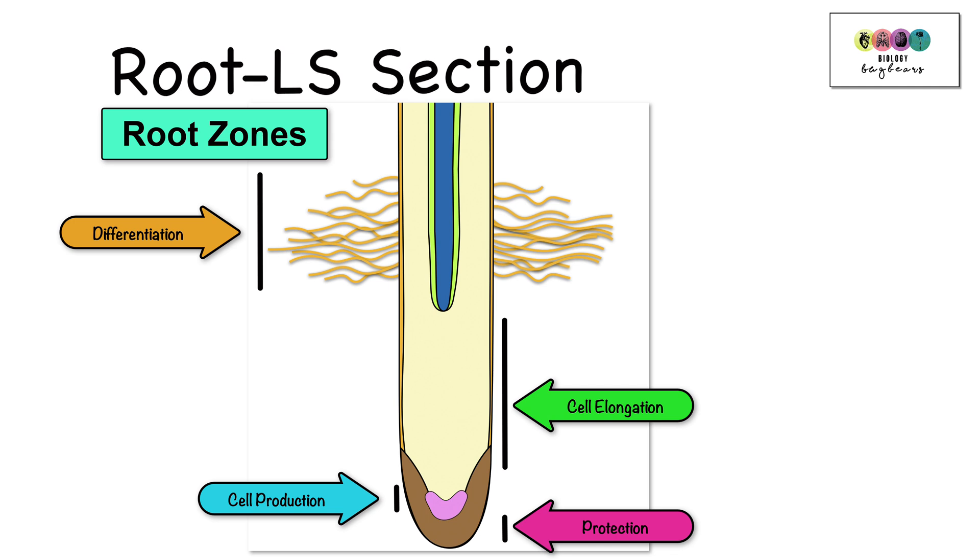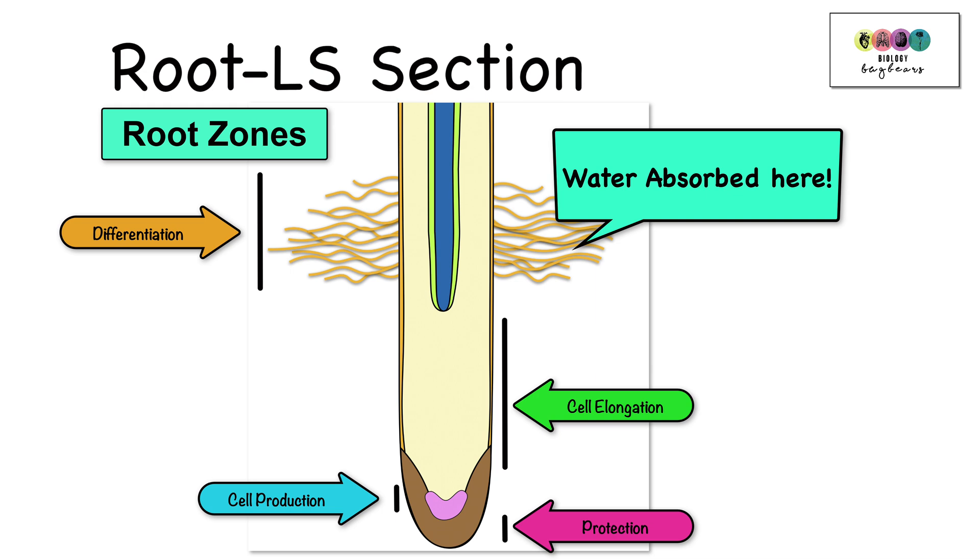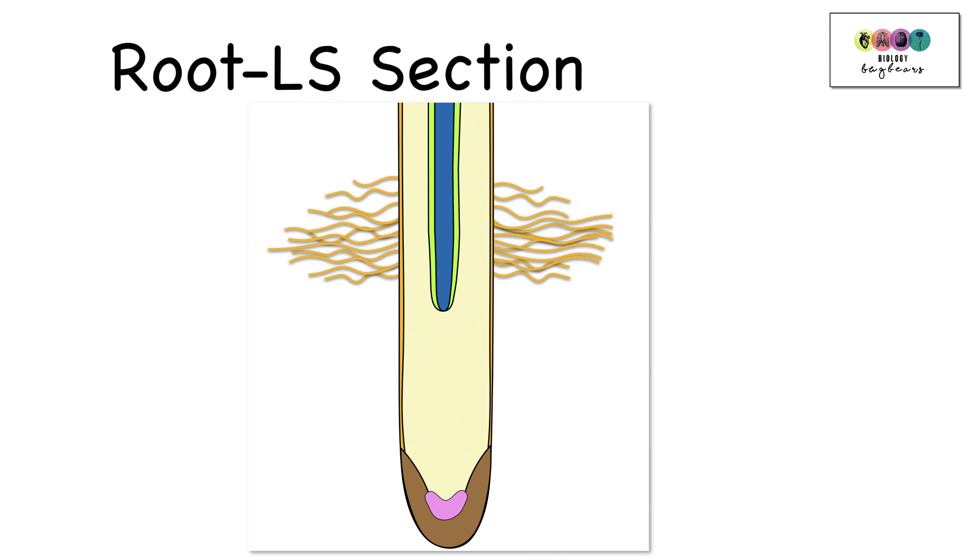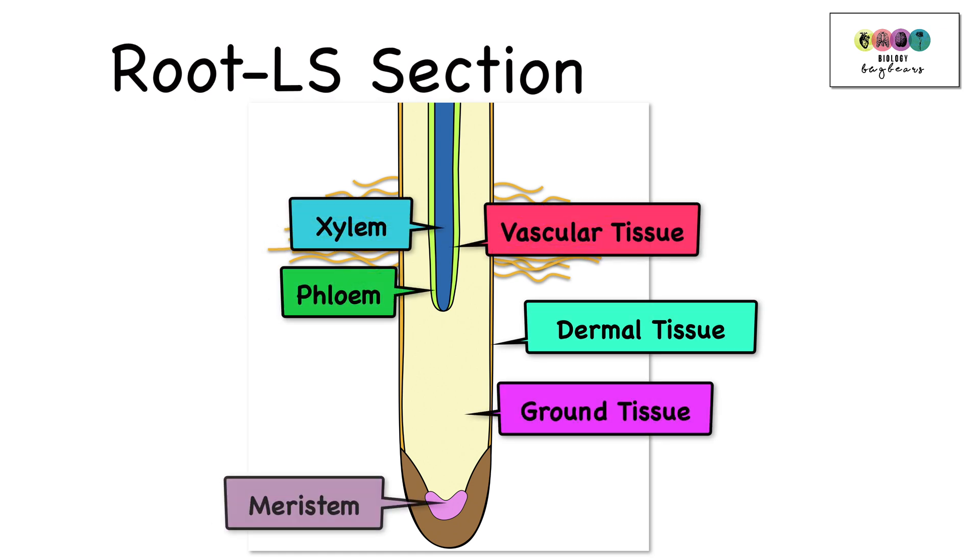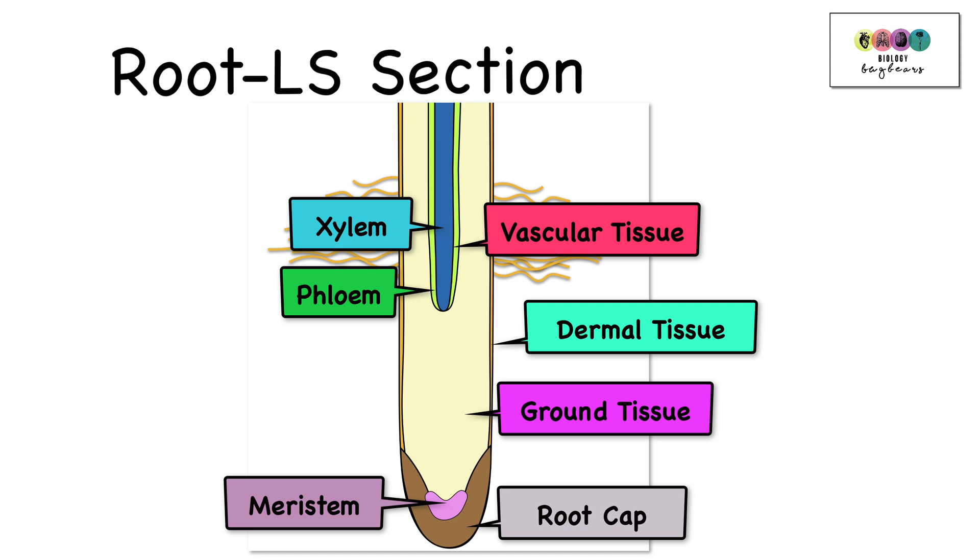And in a previous Leaving Cert question, you were asked to mark in the diagram, in what zone is water absorbed? Remember, you could be asked to draw this diagram from scratch, and not only to mark in the zones, but to label all of those specific tissues. Dermal tissue, ground tissue, vascular tissue, made up of the xylem and the phloem, also mark in the meristem and the root cap.